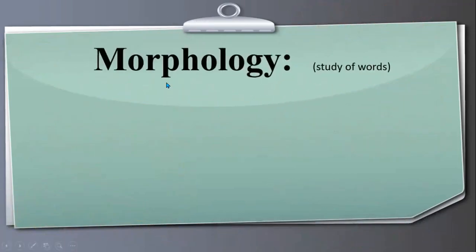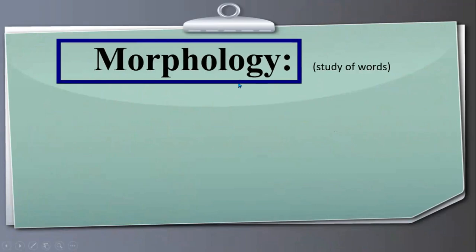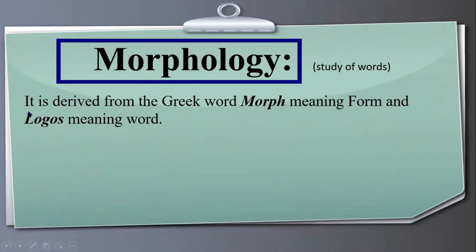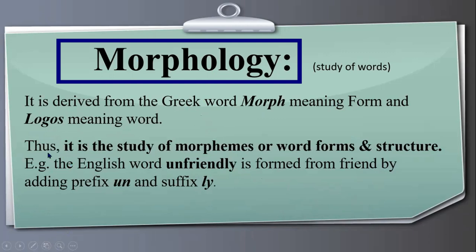Today's topic is morphology, morpheme and allomorph, and their differences. Morphology, in very simple words, is the study of words. It is derived from the Greek word 'morph' meaning 'form' and 'logos' meaning 'word'. So this term is taken from two Greek words meaning form and word. Thus, morphology is the study of morphemes, word forms and structure.